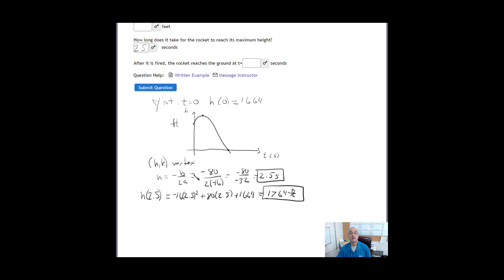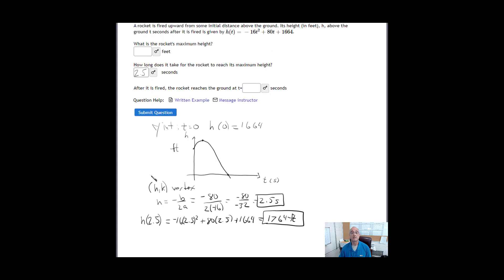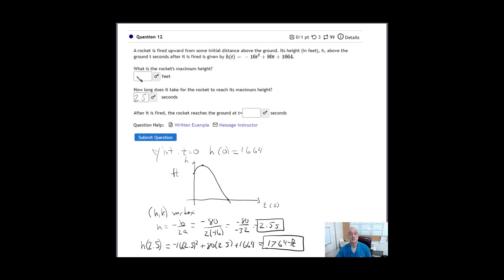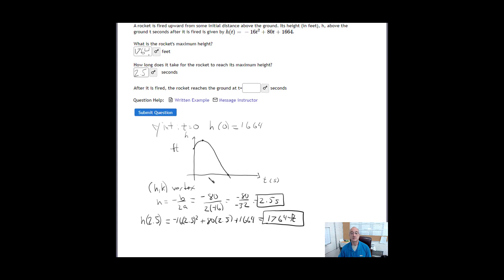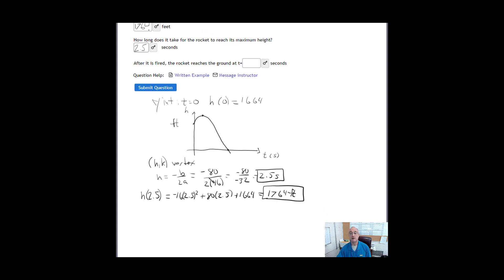Okay, now the last part of the question, so let me scroll back up here, we'll put that in. So the maximum height occurred at 1764 feet. Okay, now, last part of the question says, after it's fired, the rocket reaches the ground at t equals how many seconds? Well, so we want to find this point right here, which is the x intercept.